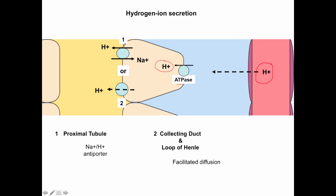Once across the basolateral membrane, hydrogen ions can cross the luminal membrane by two different mechanisms. In the proximal tubule, hydrogen crosses the luminal membrane through a co-transporter with sodium — sodium is entering the cell. This means that in the proximal tubule, hydrogen ion secretion is coupled with sodium reabsorption. This is important: hydrogen ion secretion at the proximal tubule is coupled to sodium reabsorption.